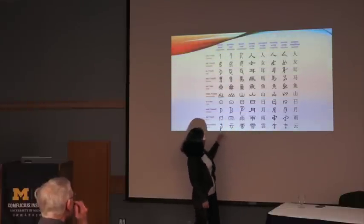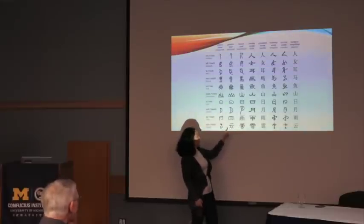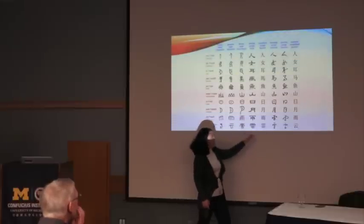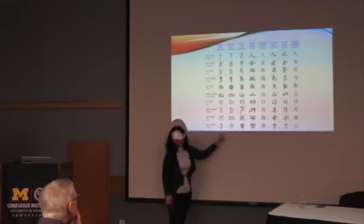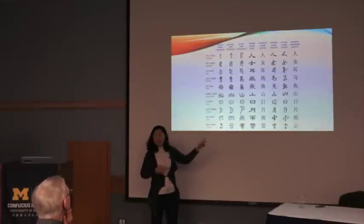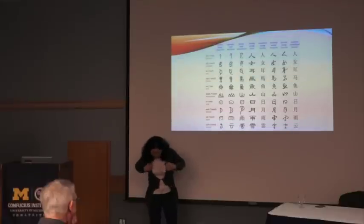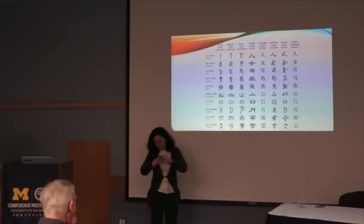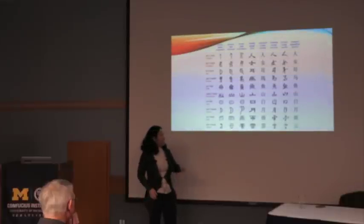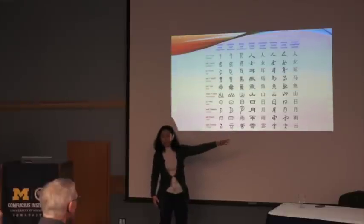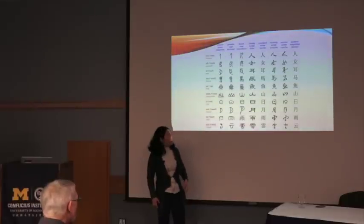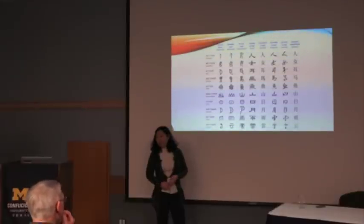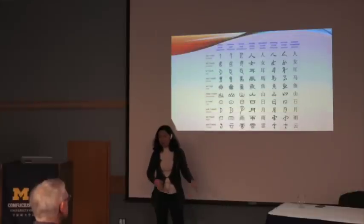Interestingly, for the 'cloud' character, you can see it became more complicated in the middle period of history, then was simplified back to something close to the original oracle bone script form. A lot of people criticize simplified characters, but in this case simplification actually returned to the most original form. You really need to study the history of Chinese characters to make a solid statement about which system is better.